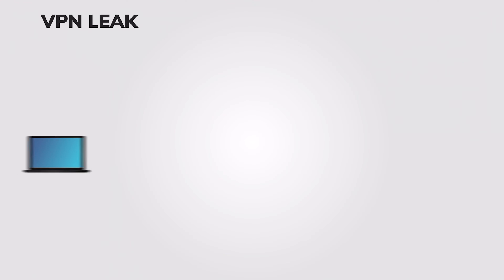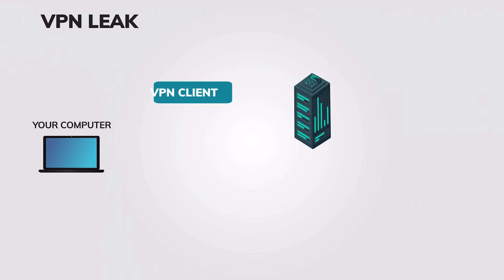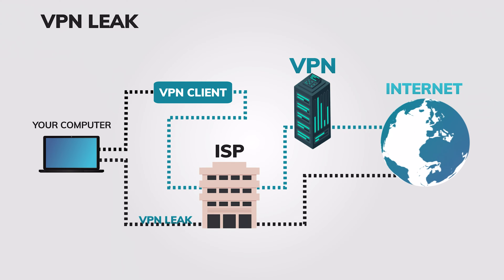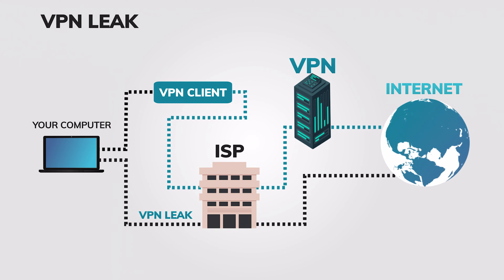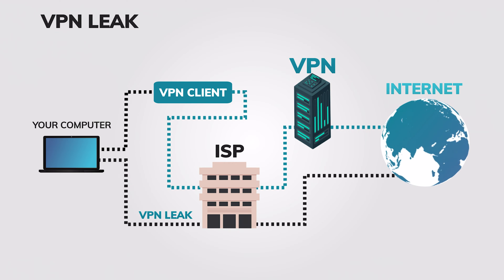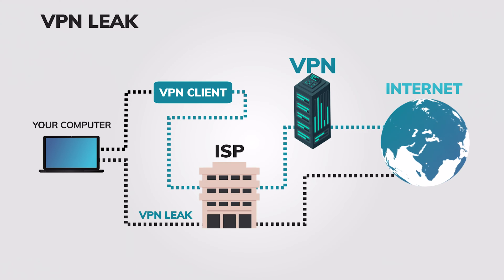Despite employing leading VPN solutions for privacy, your IP address and online activities might still be at risk, exposed through leaks originating not from your VPN itself, but from your browser or operating system. A VPN leak occurs when your actual IP address or DNS requests bypass the encrypted tunnel established by your VPN, thus revealing sensitive information to the ISP, advertisers, and potential attackers.